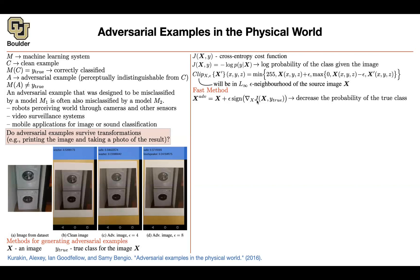You can have a different motivation. The loss function for the true class is the negative of the log of the probability of the true class. If you try to maximize this rather than minimize it — taking a step of gradient ascent with respect to x — you are trying to decrease the probability of the true class. Because of the negative sign, maximizing this means minimizing the probability of the true class. The sign comes from wanting your adversarial example to have an L-infinity norm of exactly epsilon from your input image.